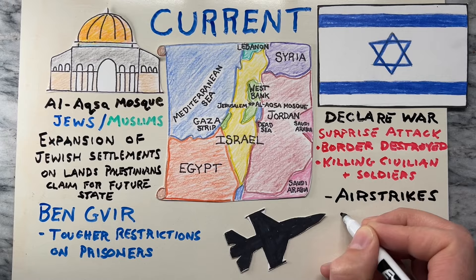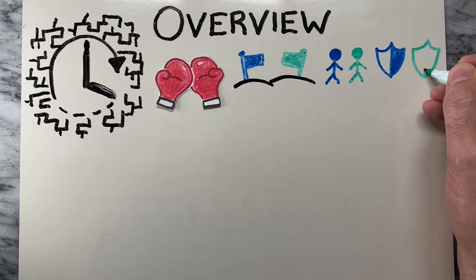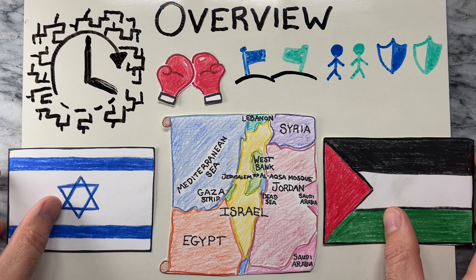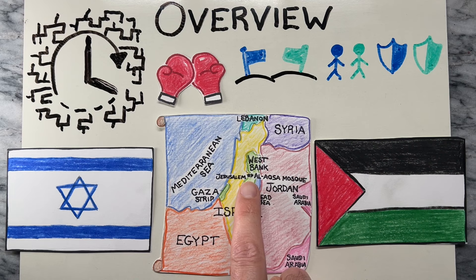The conflict between Israel and Palestine is a long-standing complex dispute over territory, national identity, and security. At its core, it revolves around the historical and competing claims of Israelis and Palestinians to the same land, particularly in the area known as Israel and the Palestinian territories — the West Bank, Gaza Strip, and East Jerusalem. Additionally, the militant group Hamas is a significant player in this conflict.